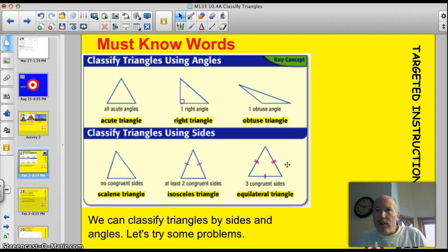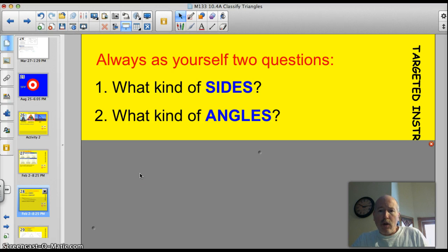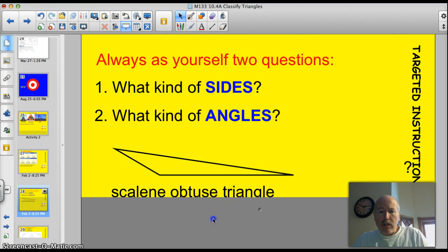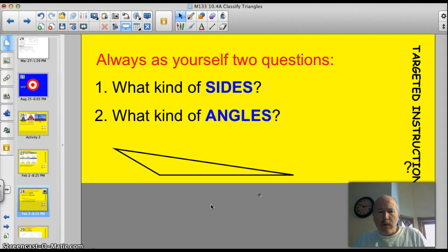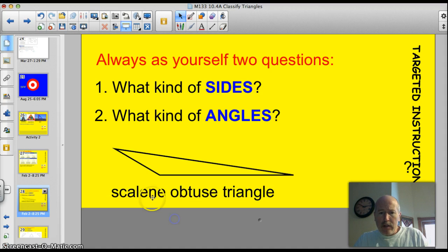Always ask yourselves these two questions: What kind of sides? What kind of angles? Here we go. Let's talk about it. What kind of sides do we have here? Well, one, two, looks like all three sides are different, so that makes it a scalene triangle. What kind of angles? Well, we've got two acute, but we do have one obtuse, so this is going to be an obtuse triangle. Put them together, we have a scalene obtuse triangle. Or an obtuse scalene, but I usually go with sides first. Let's have you try a quick 12.